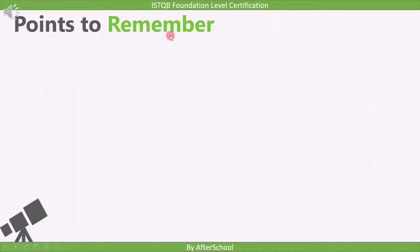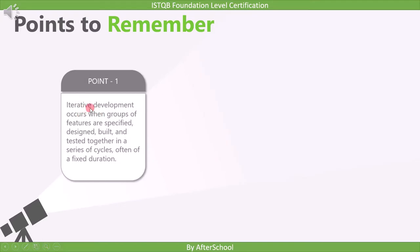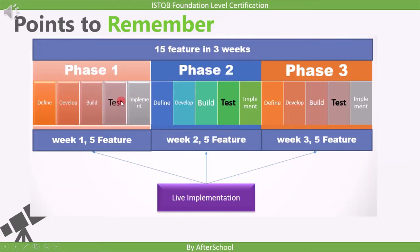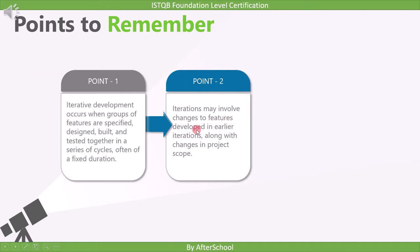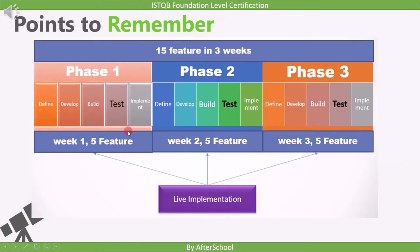Key points to remember about iterative development: Point one — iterative development occurs when groups of features are specified, designed, built, and tested together in a series of cycles, often of a fixed duration such as one week per phase. Point two — iterations may involve changes to features developed in earlier iterations along with changes in project scope. Once a feature is developed in phase one and the customer gives feedback, any requested changes are incorporated in phase two alongside the new features being developed.